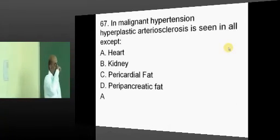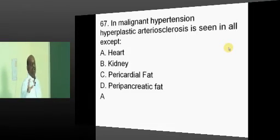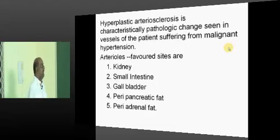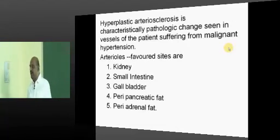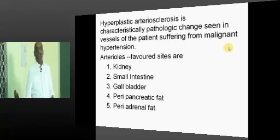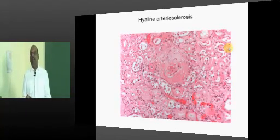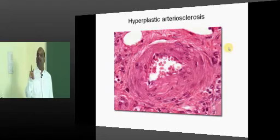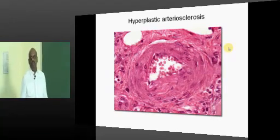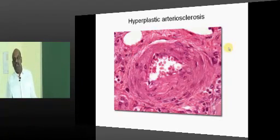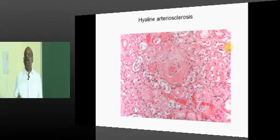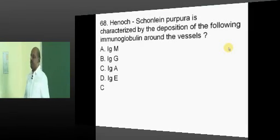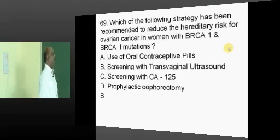In malignant hypertension, hyperplastic arteriolosclerosis — the common vessels affected are in the kidney, small intestine, gallbladder, peripancreatic, and peritoneal fat. You must know the difference between hyaline arteriolosclerosis and hyperplastic arteriolosclerosis, where you find the onion-skinning appearance. Hyperplastic occurs in malignant hypertension; hyaline occurs in non-hypertensive conditions like diabetes. IgA is the one which typically deposits in the case of Henoch-Schönlein purpura.